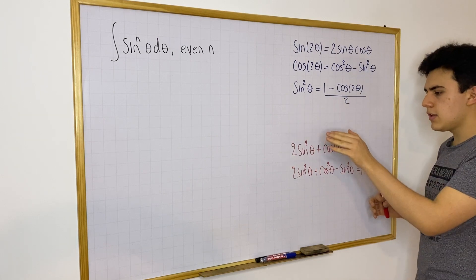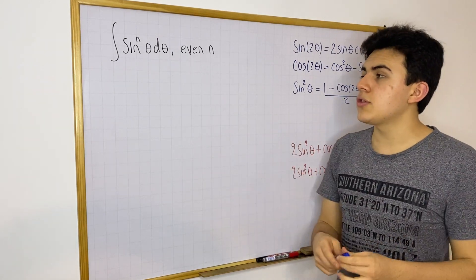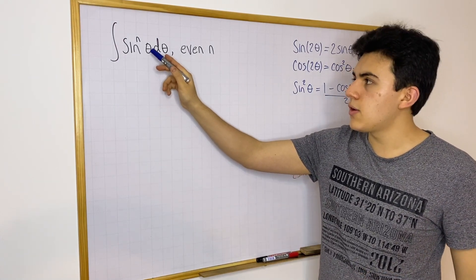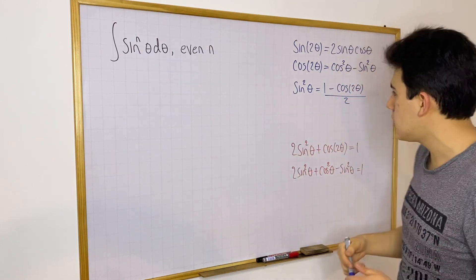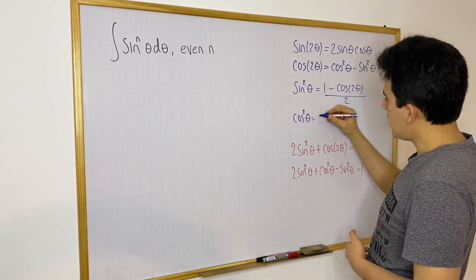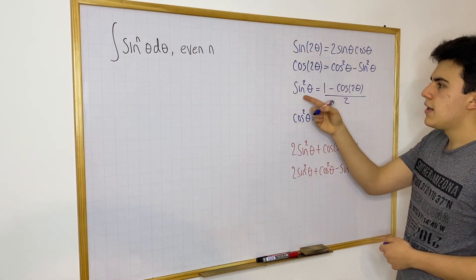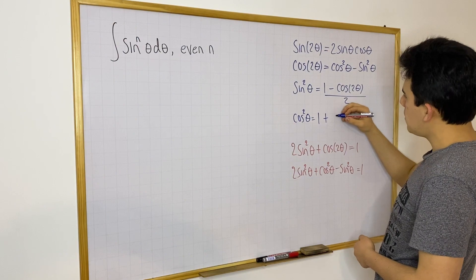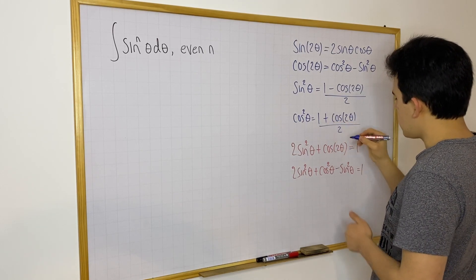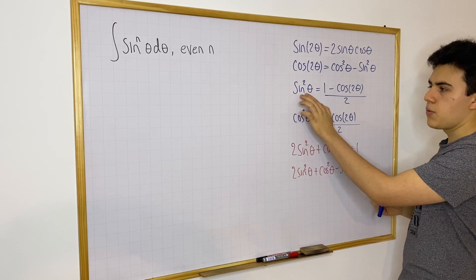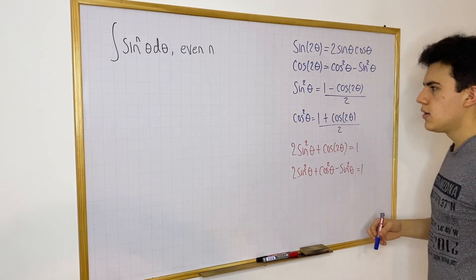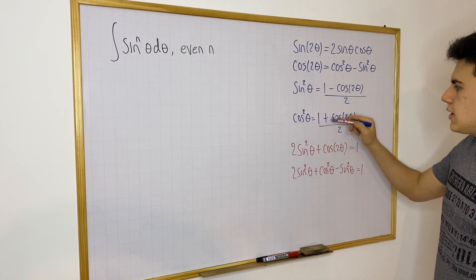We can write an equivalent expression for cosine squared. You have cosine squared θ equals 1 plus cosine of 2θ divided by 2. Notice the difference: sine has a negative sign, and cosine has a positive sign. So in both cases you rewrite the squared trig function in terms of cosine — the only difference is that minus versus plus.